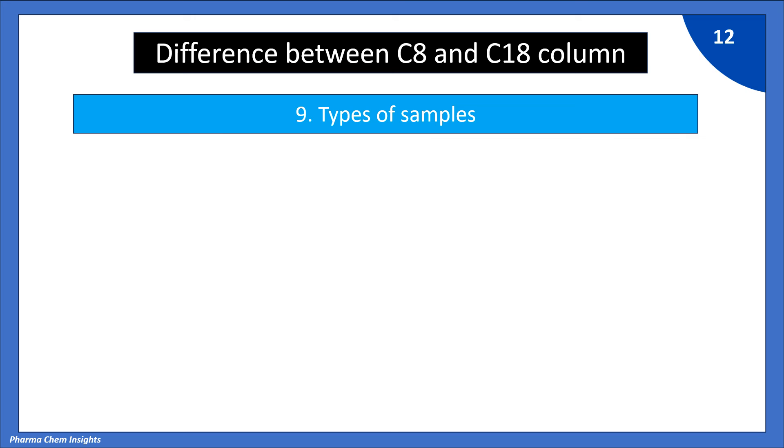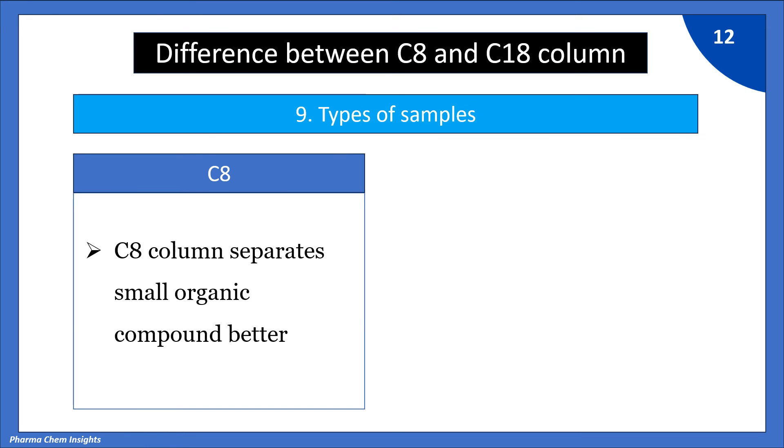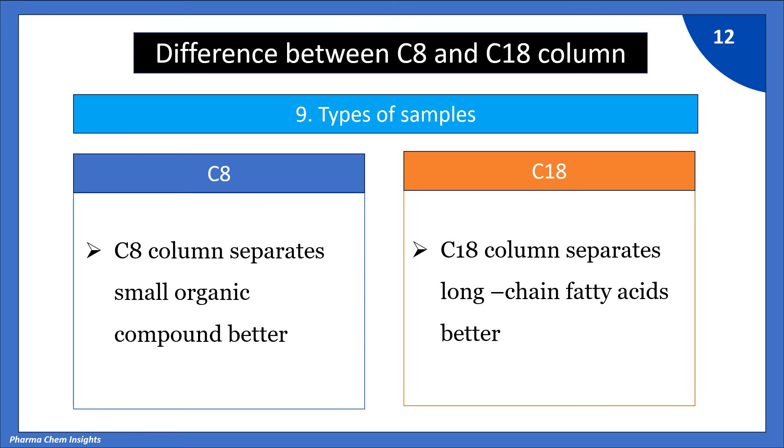9. On the basis of types of samples: C8 column separates small organic compounds better while C18 column separates long chain fatty acids well.